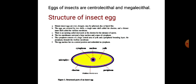Eggs of insects are centrolecithal and megalecithal. In centrolecithal eggs, the yolk is present in the middle of the egg.